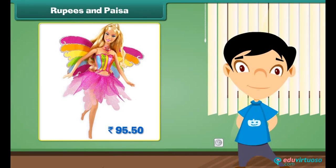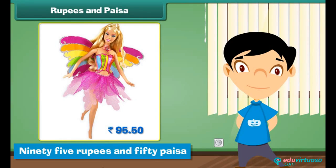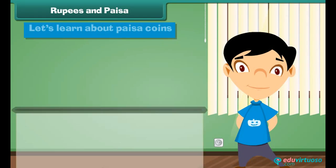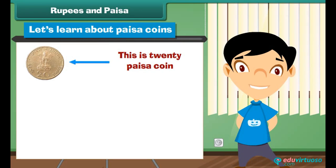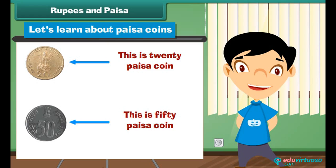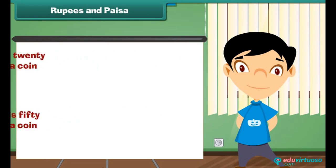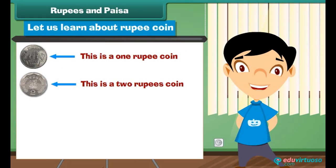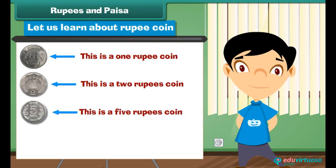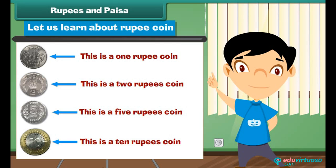Look at this Barbie doll. The price is written on its label. We read the price as 95 rupees and 50 paise. Let's learn about paise coins. This is a 20 paise coin. This is a 50 paise coin. Now let us learn about rupee coins. This is a 1 rupee coin. This is a 5 rupees coin. This is a 10 rupees coin.